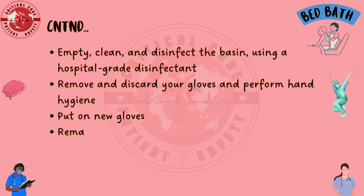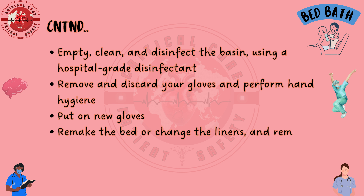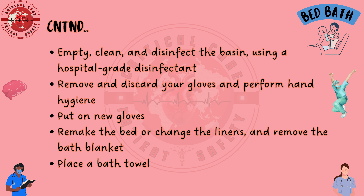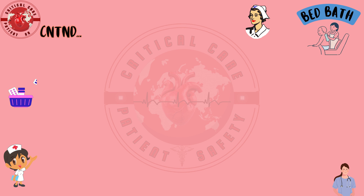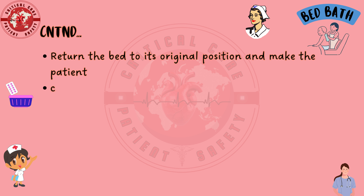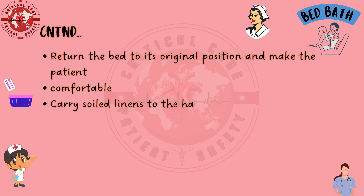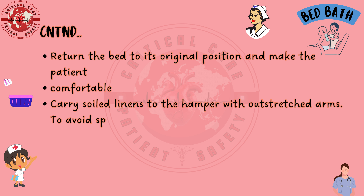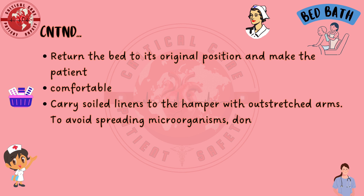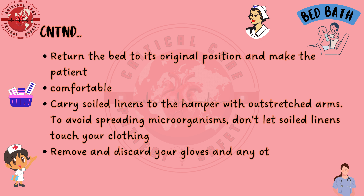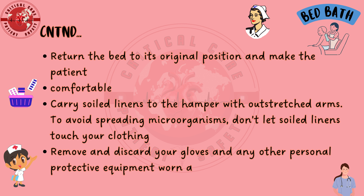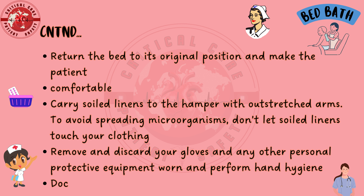Put on new gloves. Remake the bed or change the linens and remove the bath blanket. Place a bath towel beneath the patient's head to catch loose hair, then brush and comb the hair. Return the bed to its original position and make the patient comfortable. Carry soiled linens to the hamper with outstretched arms. To avoid spreading microorganisms, don't let soiled linens touch your clothing. Remove and discard your gloves and any other personal protective equipment worn, and perform hand hygiene. Document the procedure.